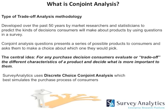Survey Analytics uses discrete choice conjoint analysis, which researchers feel best simulates the purchase process of consumers. In years gone by, conjoint analysis was performed by writing down all possible products on different cards — a task called a card sort — where subjects would rank all the cards. The problem is that doesn't reflect real behavior. Discrete choice conjoint analysis best simulates how consumers decide by presenting them with a set of alternatives, usually three, and asking which one they would choose. That's why it's called discrete choice, and that is an important distinction.